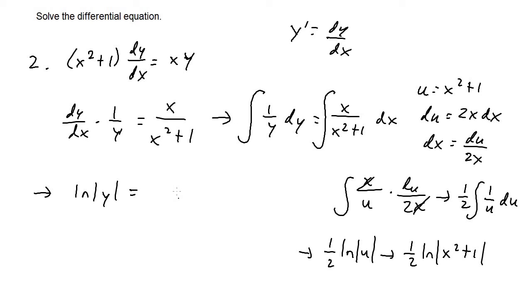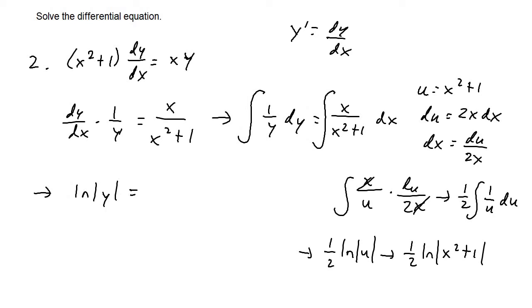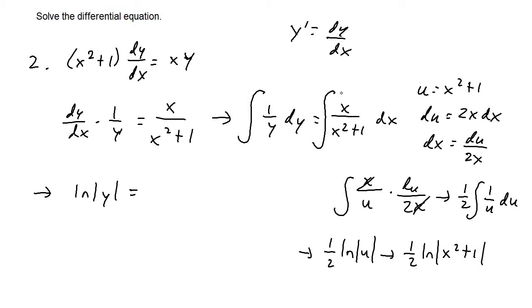So putting it together, the integral of one over y dy equals ln|y|, which equals one half times ln|x² + 1|. Because we integrated both sides, we add plus c on the right side — the side with the x variable.